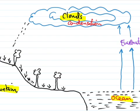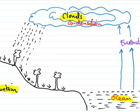After condensation, we have water falling. So this process in the hydrological cycle would be precipitation. Precipitation is when water falls down from the clouds.